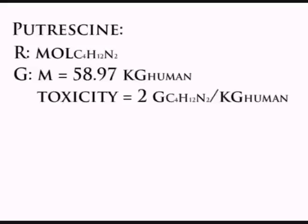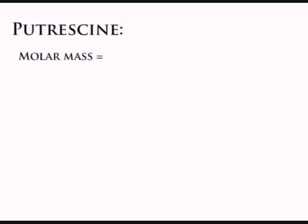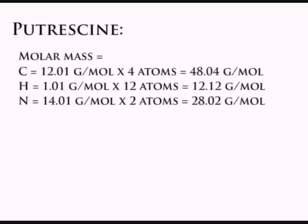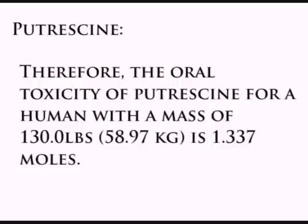To calculate the oral toxicity of putrescine in moles for a person that has a mass of 130.0 pounds, or 58.97 kilograms, the equation is set up as follows. Required: moles of putrescine. Given values are the mass of a human in kilograms and the toxicity in grams per kilogram. To begin the solution, the molar mass of putrescine must be found. Next, I form my equation, solve, and reduce to significant figures. The oral toxicity for a human with a mass of 130.0 pounds is 1.337 moles of putrescine.